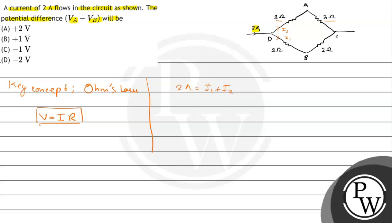So, the current will divide equally. This means I1 equals I2. So, we can say that I1 equals I2 equals 2 divided by 2 equals 1 Ampere.